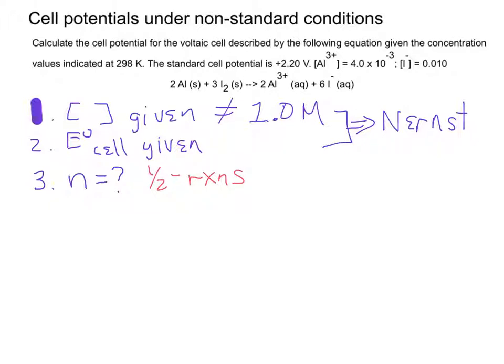So, for example, the half reaction for the aluminum is aluminum going to aluminum 3 plus with three electrons.